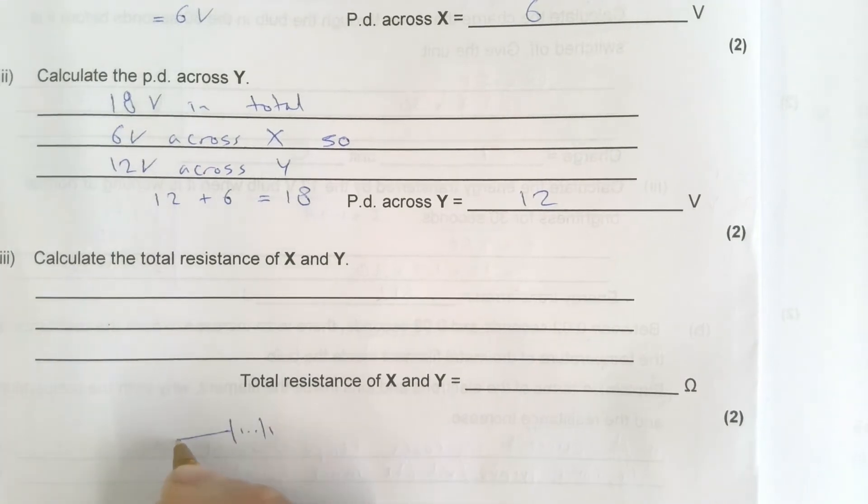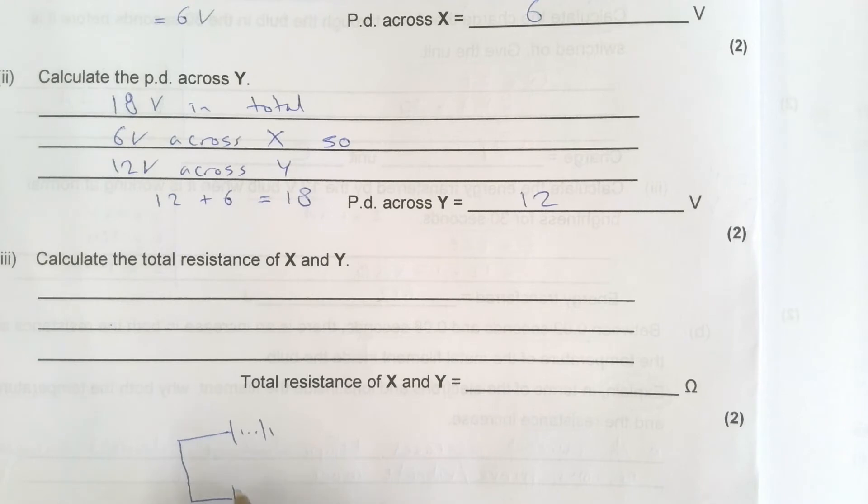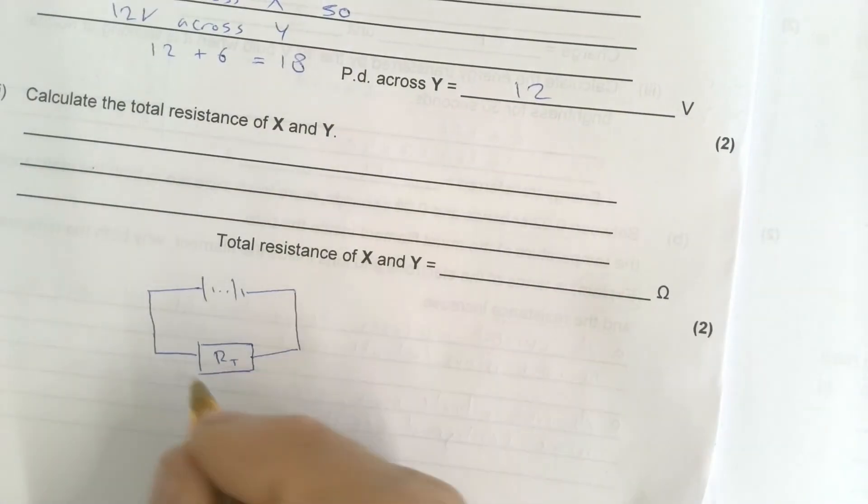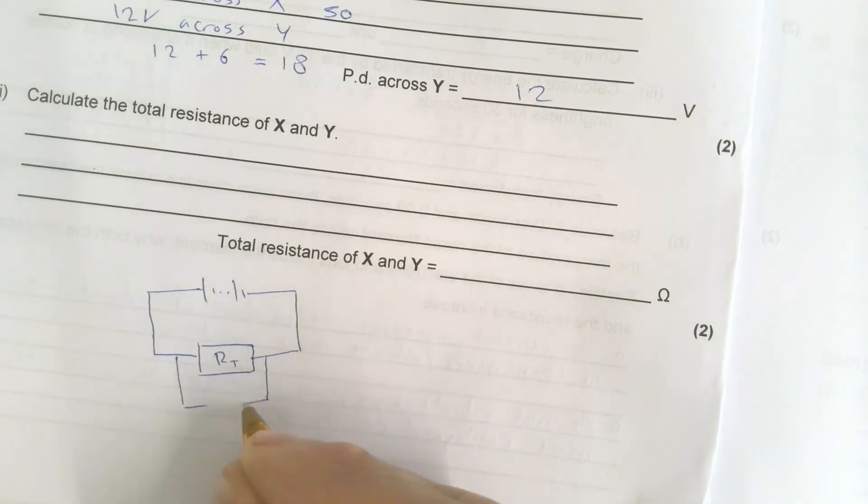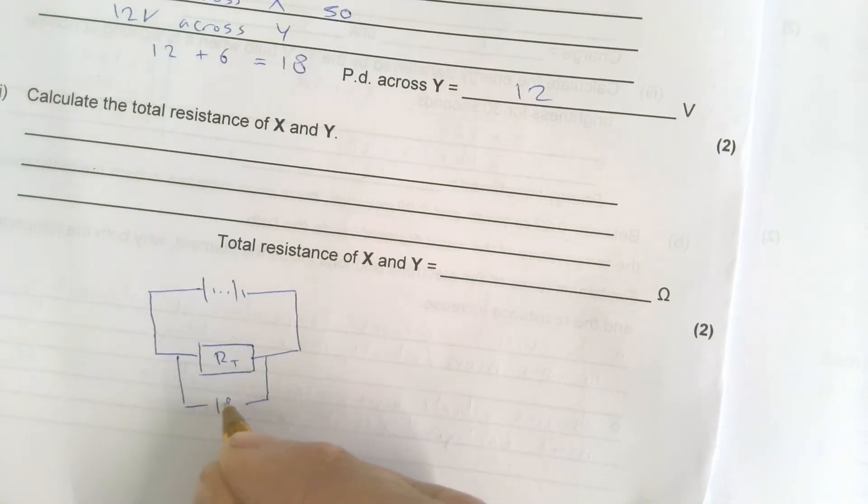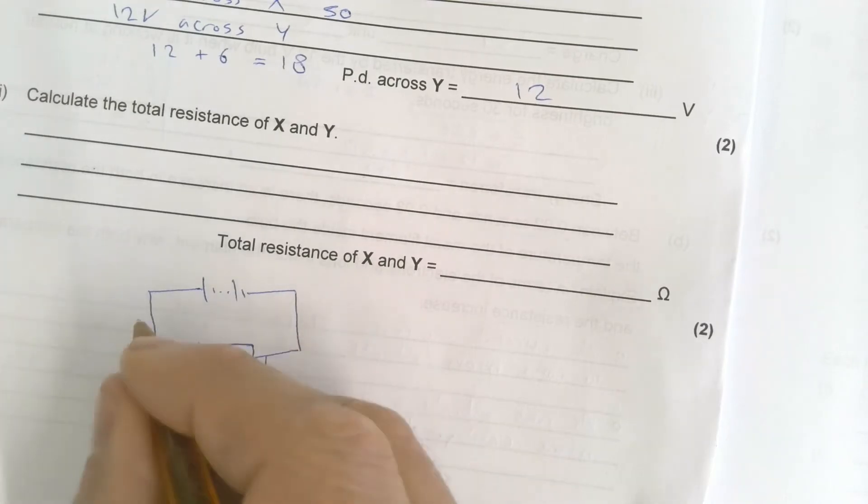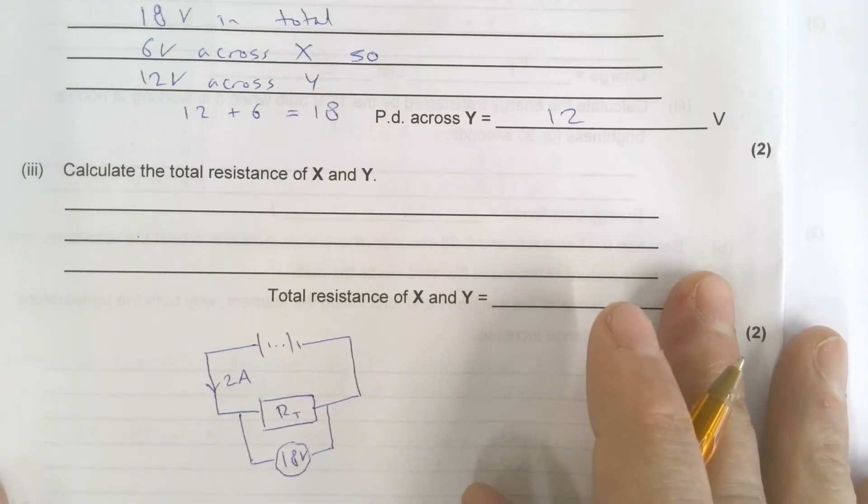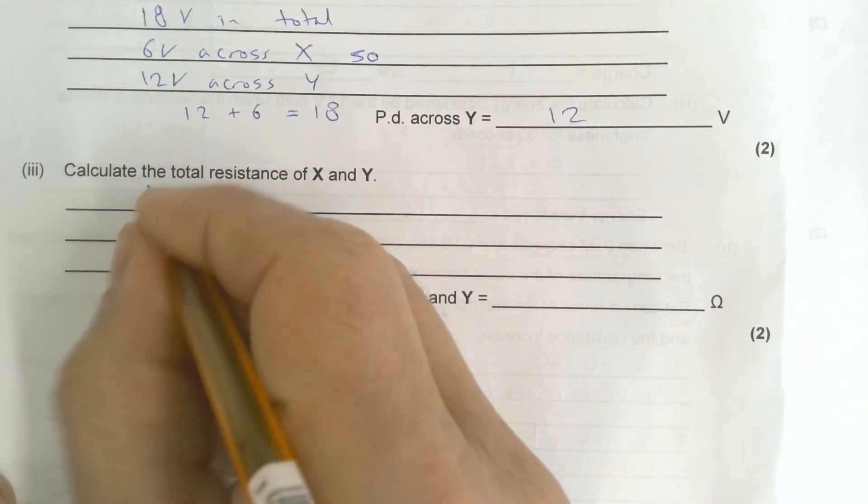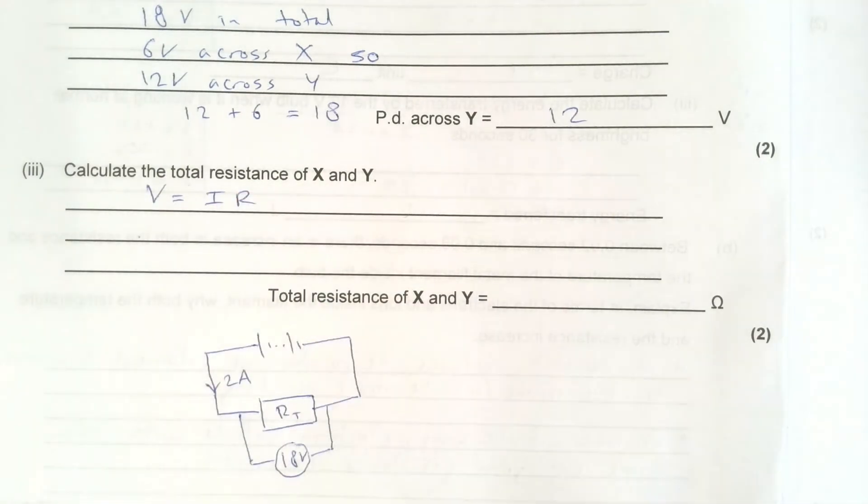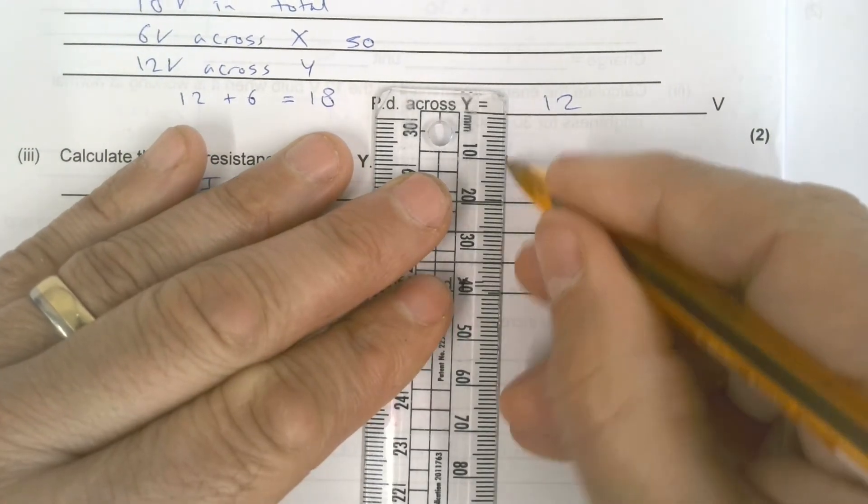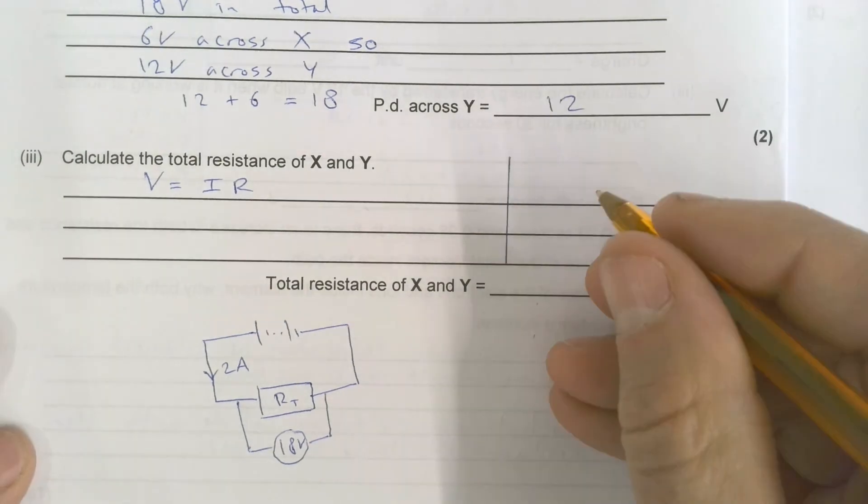So let's imagine for a moment, instead of that circuit up there, we have this circuit here. I'm just going to redraw it quickly. If I'm looking for the total resistance, I want to combine those two resistances together. So RT. So I'm going to go RT. And I know across RT there is a total of 18 volts. And I know there's a current going through it of 2 amps. And I know that V is equal to IR, which is the equation we use most often for this topic.